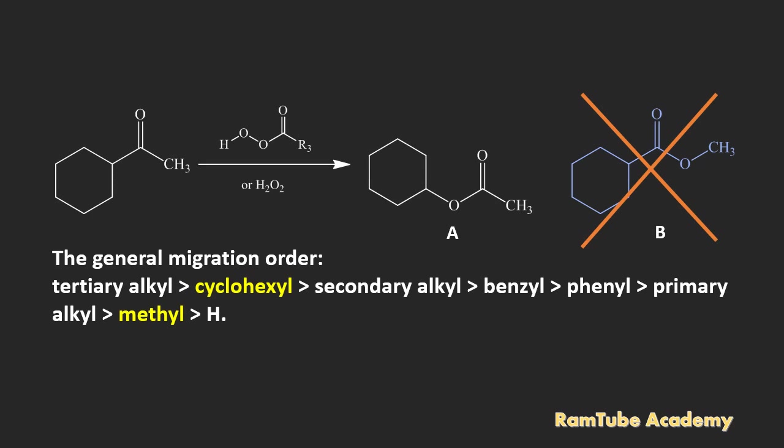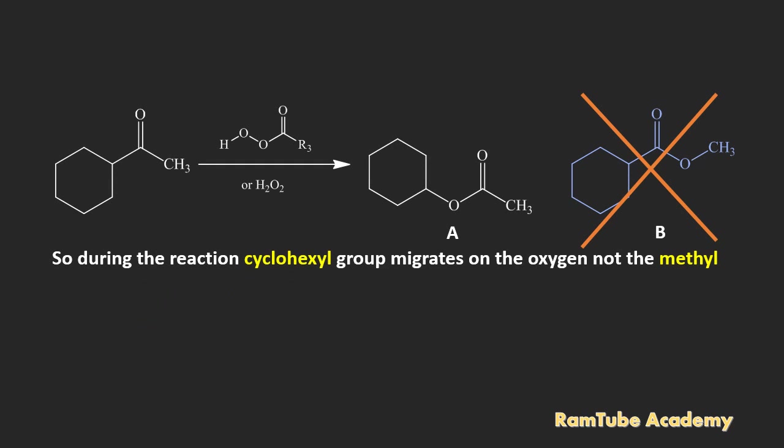The migration order tells us that cyclohexyl is more electron rich than the methyl and hence oxygen will get inserted between the cyclohexyl and the carbonyl carbon. And that's why product A is more feasible.